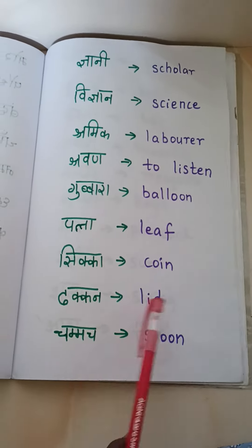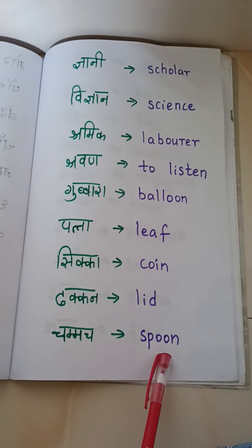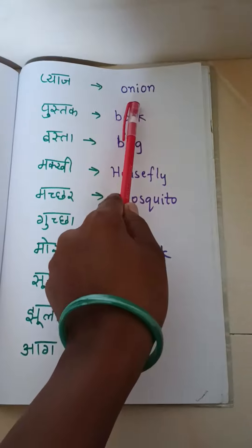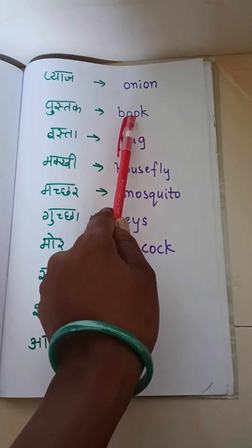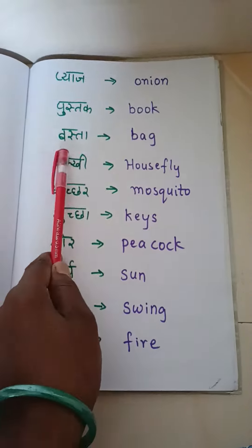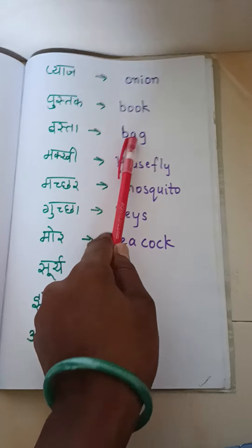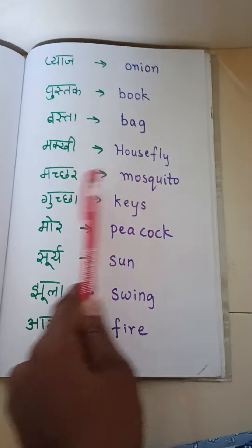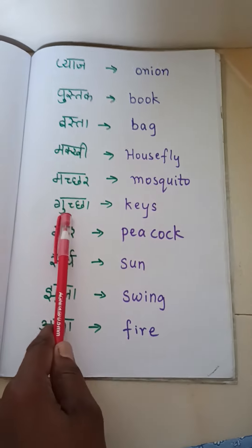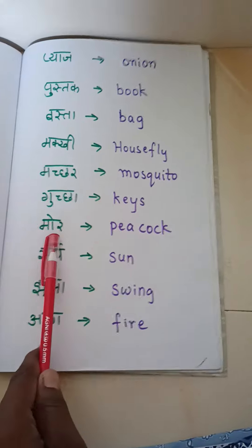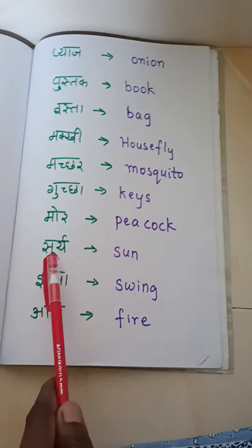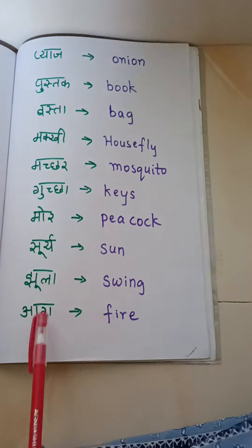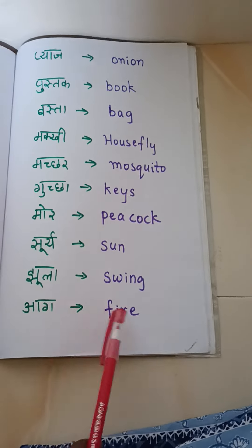Dhakhan — lid. Chamach — spoon. Piaz — onion. Pustak — book. Basta — bag. Makhi — housefly. Machar — mosquito. Guccha — keys. More — peacock. Suri — sun. Jhula — swing. Aag — fire.